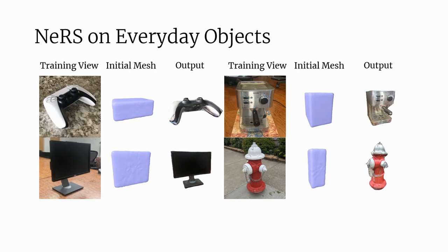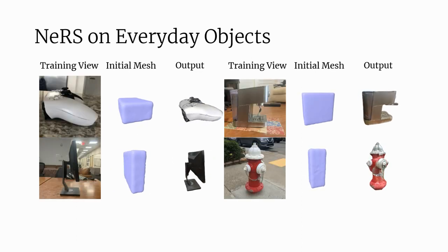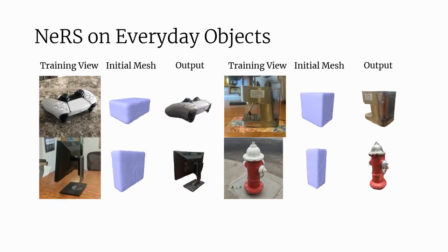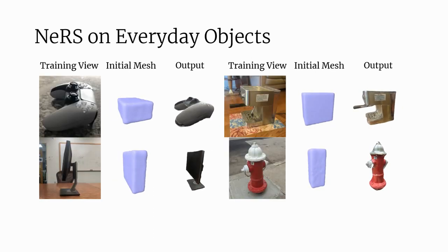Here we visualize some qualitative results. We demonstrate our approach on a variety of indoor and outdoor objects. We find that a coarse cuboid is often sufficient as the shape initialization.